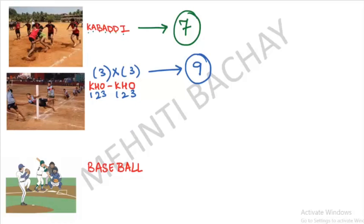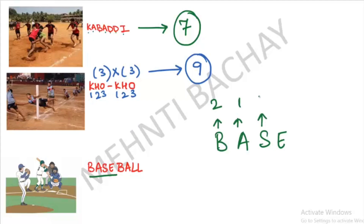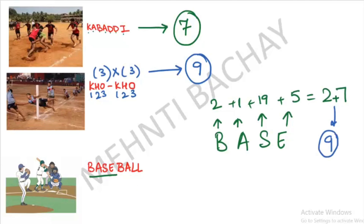Next is Baseball. To remember the number of players, take the word 'BASE': B is the 2nd letter (2), A is 1, S is 19, E is 5. Add them: 2+1+19+5 = 27. Then add the digits: 2+7 = 9. So Baseball has 9 players. Remember: Kho Kho and Baseball both have 9 players.